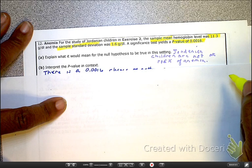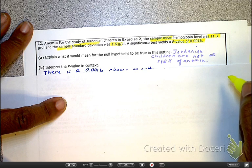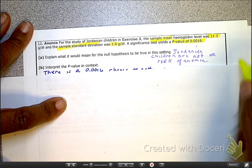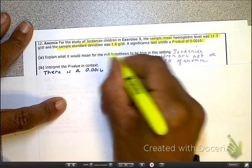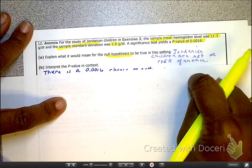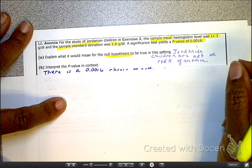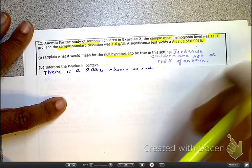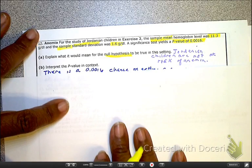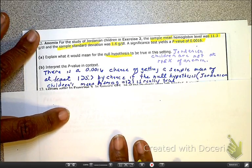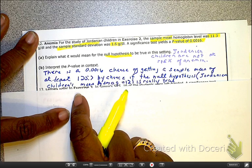That would be the null hypothesis, your HO. So your alternative would be, in this situation, no, I think it's a little low. But for this situation, we are claiming that it is equal to 12, which means they are not anemic.